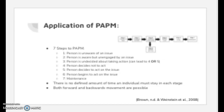Should an individual enter stage 5 and choose to act, they will then move into stage 6, where they are actively acting on the issue. PMPM suggests that while detailed implementation information is uninteresting to those in early stages, it is pertinent to those who have decided to act in stage 6. Finally, an individual enters stage 7, a maintenance stage. While stage 6 involves a one-time action, stage 7 focuses on repeated and sustained action to address an issue. An individual can move both forward and backwards within the model, and there is no defined period of time an individual must remain in a given stage.